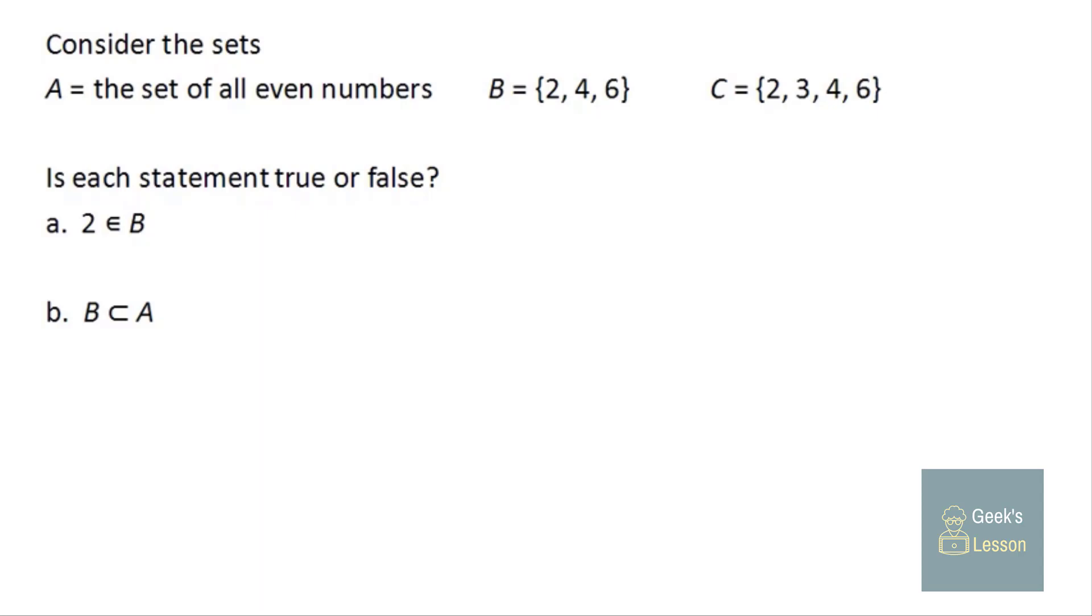So consider these three sets: A, the set of all even numbers; B, the set 2, 4, 6; and C, the set 2, 3, 4, 6.